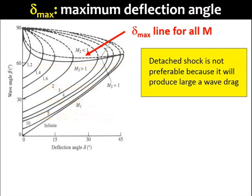For example, if we have an object flying at Mach 2 with an inclined surface deflection of 30 degrees, the shock will be detached from the object. The reason is because the delta max for a Mach 2 is 23 degrees, which is smaller than the actual delta of the surface.